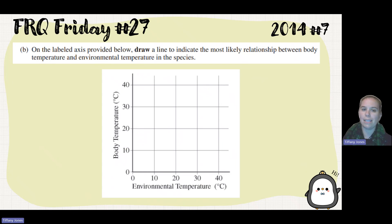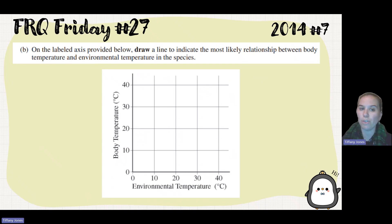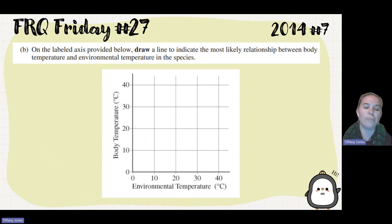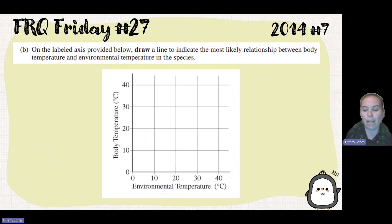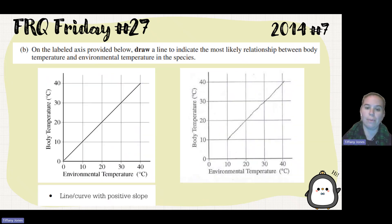On the labeled axis provided below, draw a line to indicate the most likely relationship between the body temperature and the environmental temperature in the species. And so we're going to see that since it's an ectotherm, when it's at low temperatures it's going to have a low body temperature, and when it's at high temperatures it's going to have a high body temperature. So I should see a linear line going straight up.